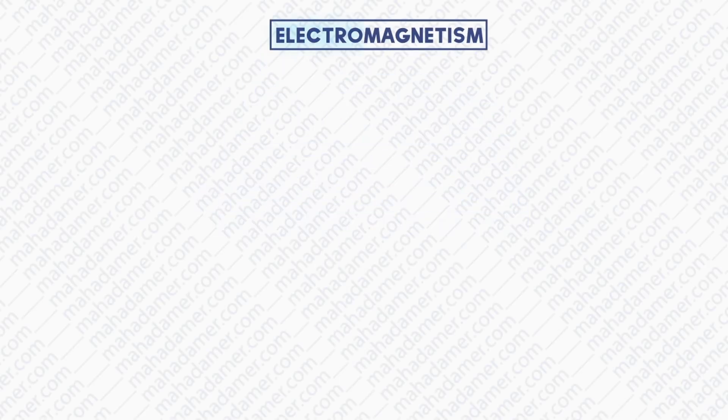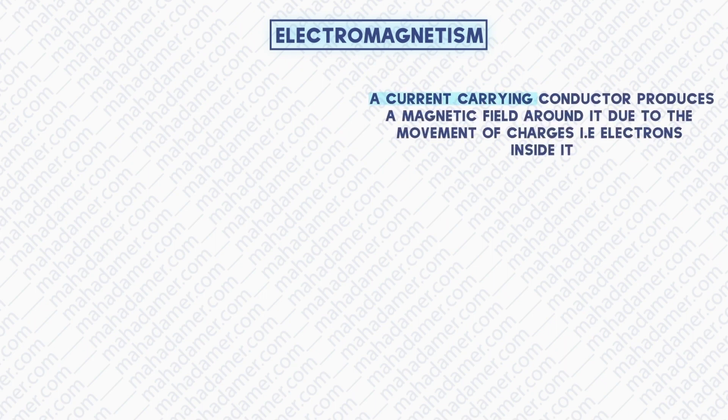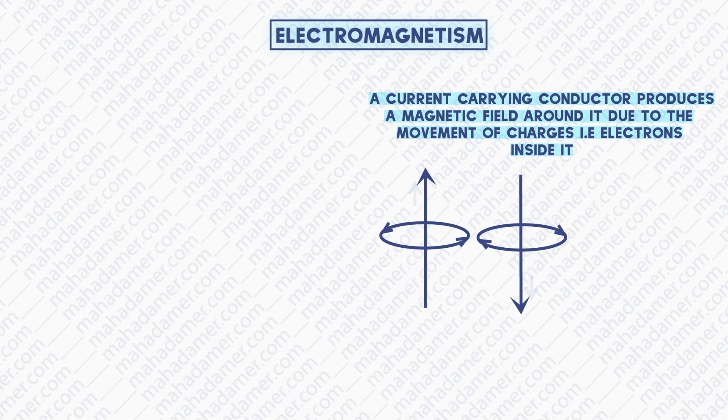So basically, what is electromagnetism? Electromagnetism is when a current carrying conductor produces a magnetic field around it due to movement of charges. For example, if the current is flowing upwards or the current is flowing downwards, there will always be a magnetic field around it.